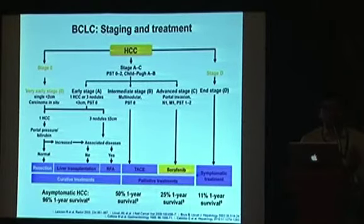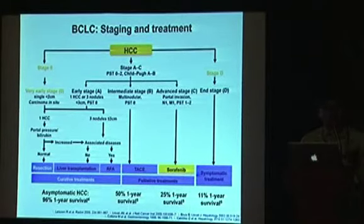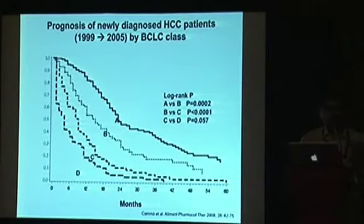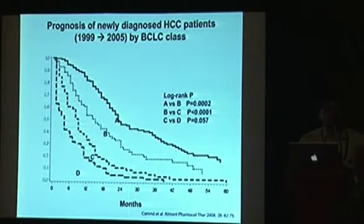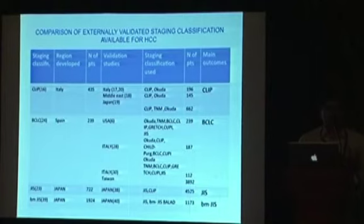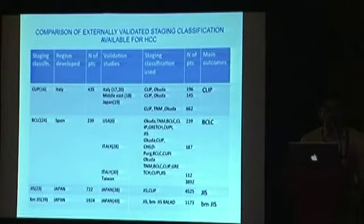The BCLC staging system takes into account smaller tumors, liver function, performance status, and the patient's associated conditions. Most importantly, it gives direction towards the required treatment, which is not present in other staging systems. For early and small tumors there is a distinct stratification with significant survival differences, though this disappears towards the highest stages. Validation studies show that BCLC and CLIP have been validated outside their countries of origin and found acceptable, while the Japanese staging system has not been validated outside Japan.